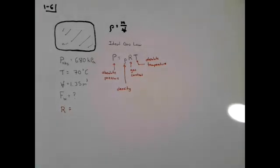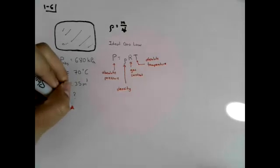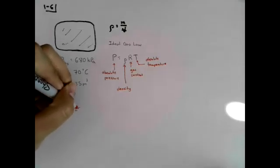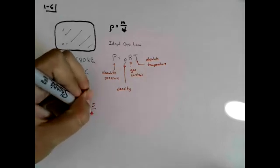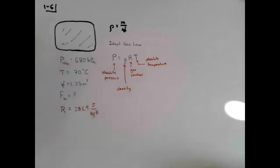We can look up the gas constant for air. The book has an appendix at the back with several properties of fluids, and one of those properties is the gas constant. The gas constant for air given in the book is 286.9 joules over kilogram times kelvin.